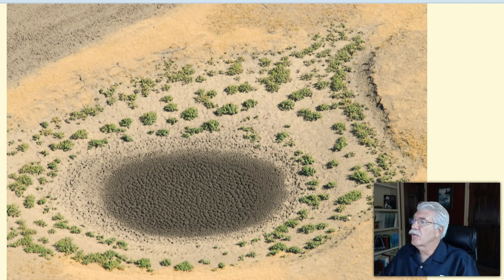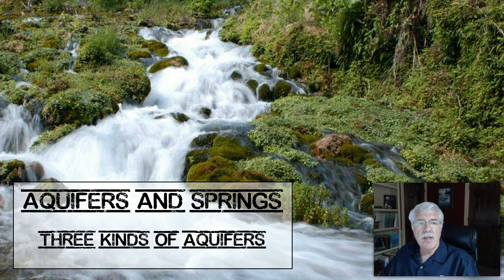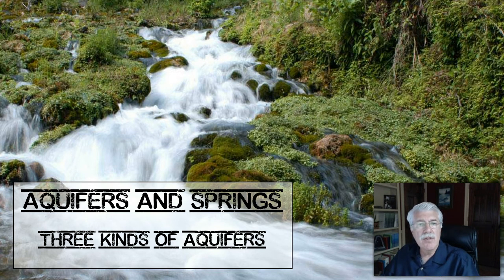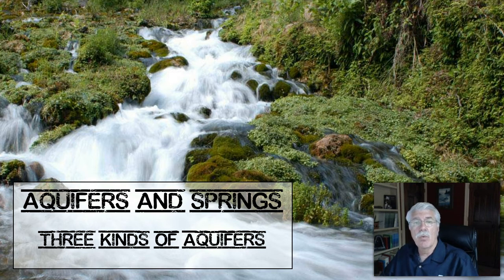The next kind of aquifer we're going to discuss are confined aquifers. Confined aquifers are saturated layers of pervious rock bounded above and below by largely impervious rock. Impervious rock is rock where water can't pass through; pervious rock is rock where water can pass through. This placement of the aquifer between impervious rock layers can squeeze the groundwater, placing it under pressure. A confined aquifer containing water under pressure is called an artesian aquifer.